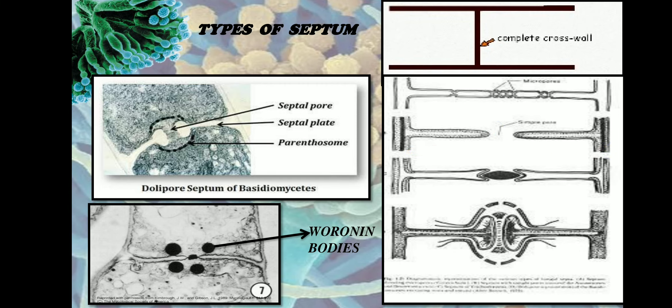This type of septum is called simple septa. In complete septa, there is no septal pore. The pore present in between the septum is called a septal pore.